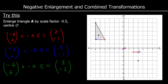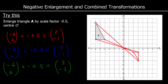Join up the points, and that is our new shape. Again, the red point to the red point, the blue point to the blue point, and the green point to the green point will all go through the centre of enlargement.